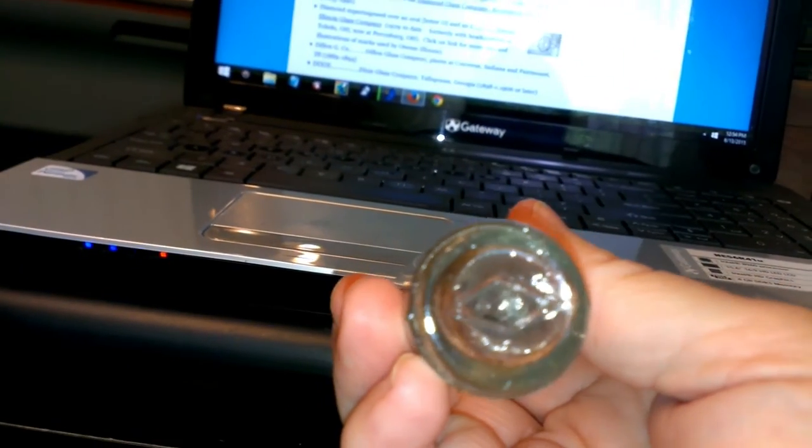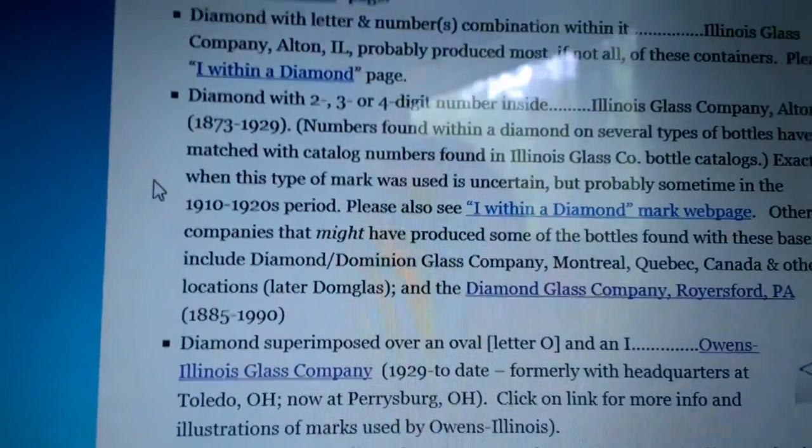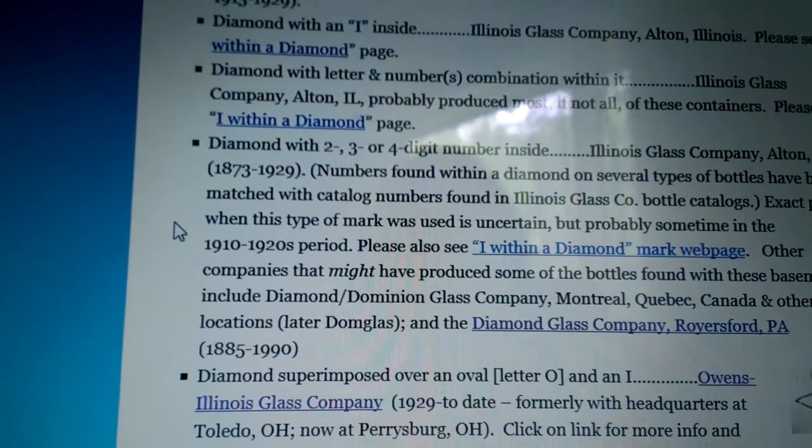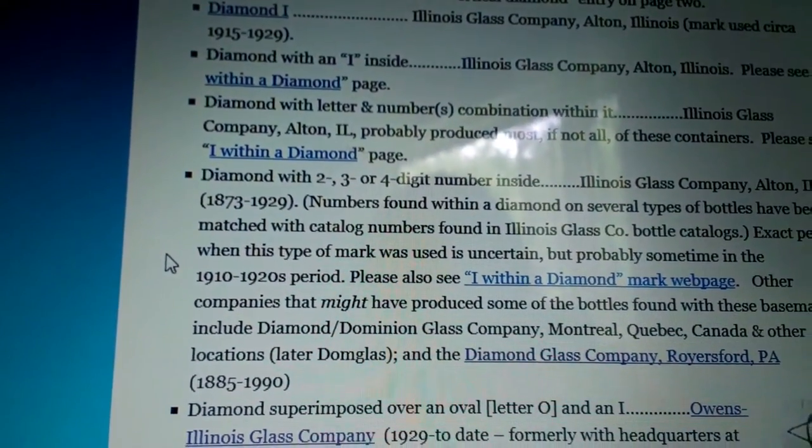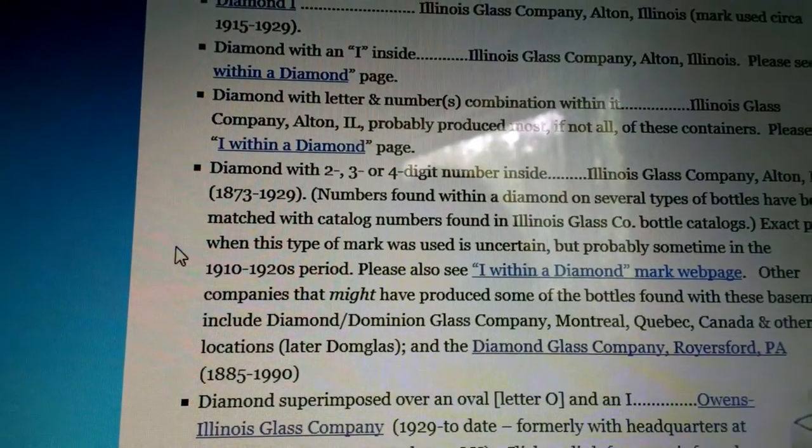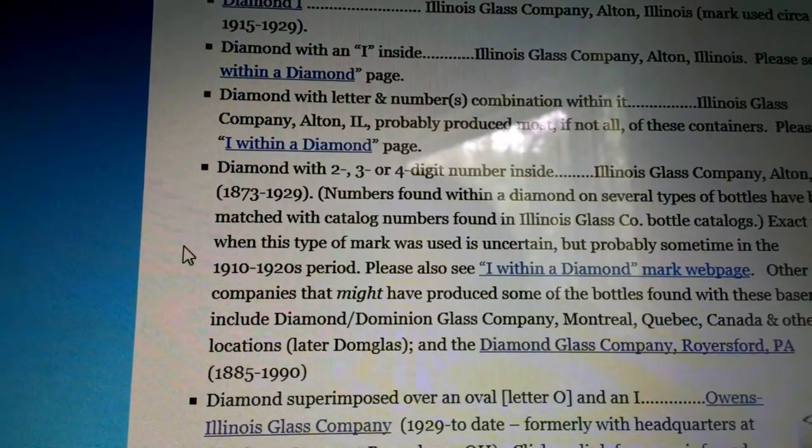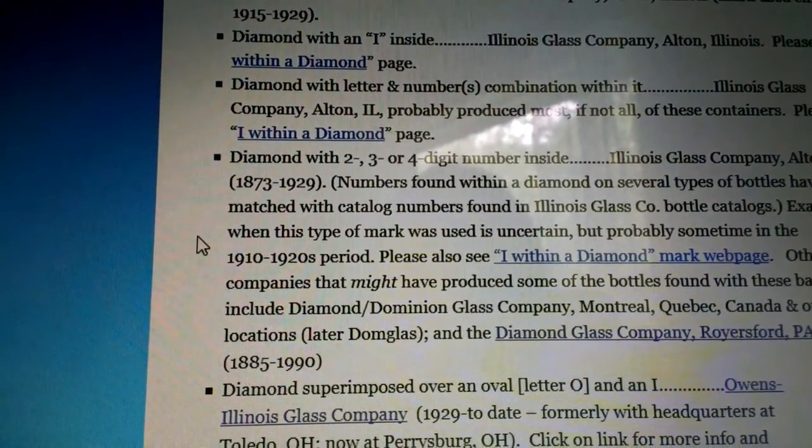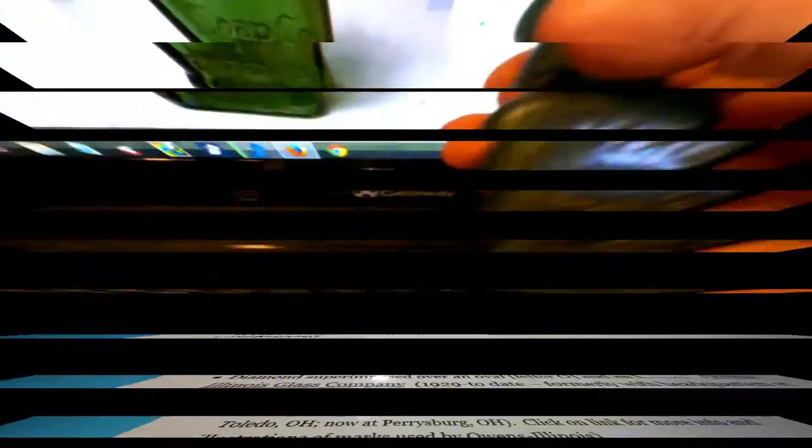Okay, this bottle just has a diamond with three numbers in it. So I looked that up and it says diamond with a two, three, or four digit number. Illinois Glass Company, Alton, Illinois, 1873 to 1929. And it says exact period when this mark was used is uncertain, but probably sometime within 1910 to 1920s period. So that exactly fits with part of this stuff.